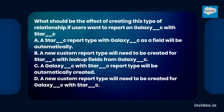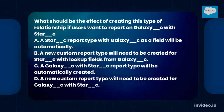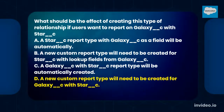a. A star__c report type with galaxy__c as a field will be automatically created. b. A new custom report type will need to be created for star__c with lookup fields from galaxy__c. c. A galaxy__c with star__c report type will be automatically created. d. A new custom report type will need to be created for galaxy__c. The answer is option D: a new custom report type will need to be created for galaxy__c with star__c.